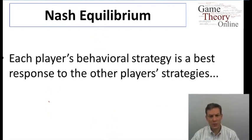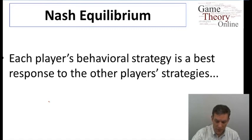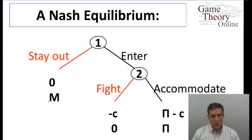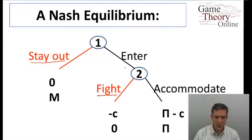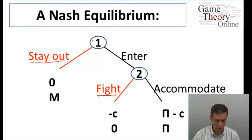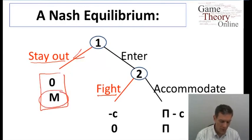Let's analyze this game, first looking at Nash equilibrium. We want to specify strategies that are best responses to the other player's strategy. Here's one Nash equilibrium: the first firm — the new firm — decides to stay out, and the second firm would fight if the first firm entered. With these strategies we end up with monopoly profits for the existing firm and nothing for the possible entrant.